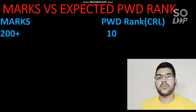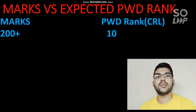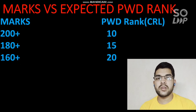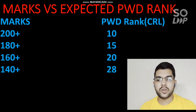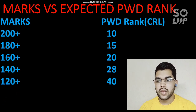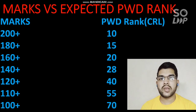I have prepared this data by considering all relevant factors and last year's data to give you a very accurate marks versus expected PWD rank. If you score 200+ marks, your rank will be under 10. For 180+ your rank will be under 15, for 160+ under 20, for 140+ under 28, for 120+ under 40, for 100+ under 55, and for 80+ under 70.